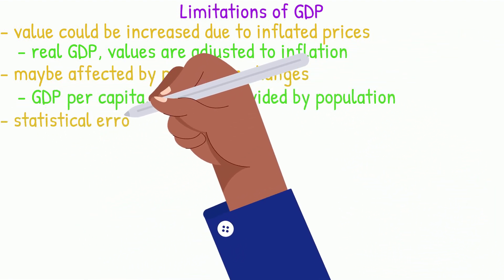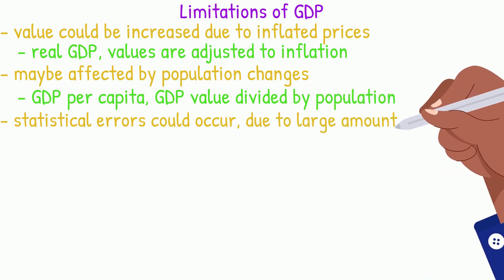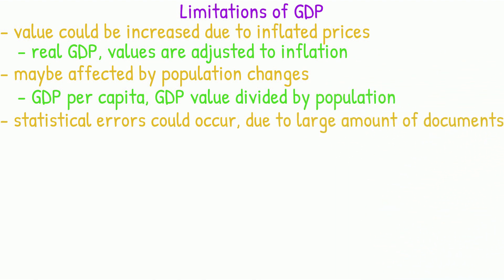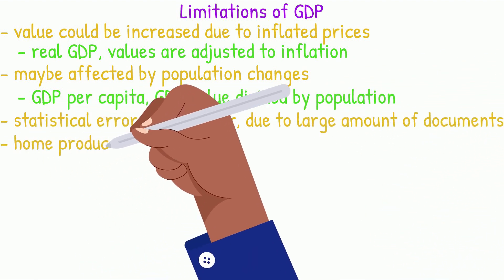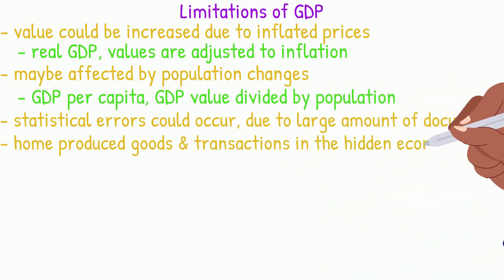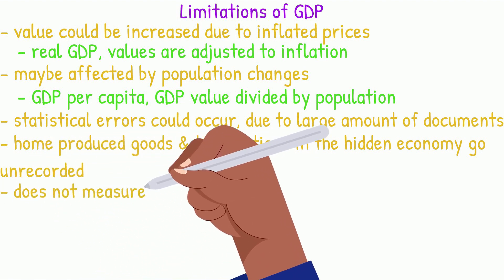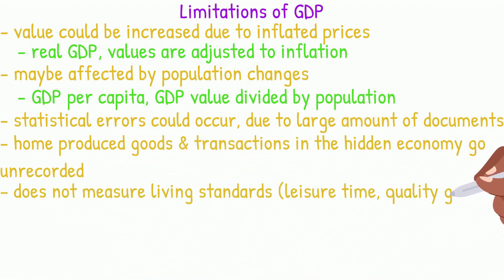Statistical errors could occur due to the large amount of documents governments deal with to calculate GDP. Home produced goods and transactions in the hidden economy go unrecorded and do not contribute to GDP. Another limitation is that GDP does not measure living standards such as leisure time and quality of goods.